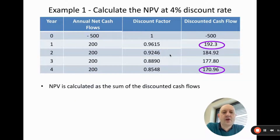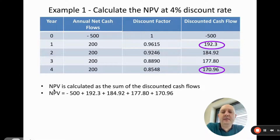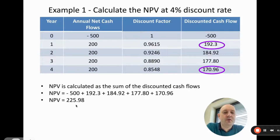To calculate the discounted cash flows, you multiply the cash flow by the discount factor. So minus 500 times 1 gives minus 500; 200 times 0.9615 gives 192.3; 200 times 0.9246 gives the next value, and so on. The NPV — net present value — is then the sum of all the discounted cash flows, giving us NPV = 222.98.